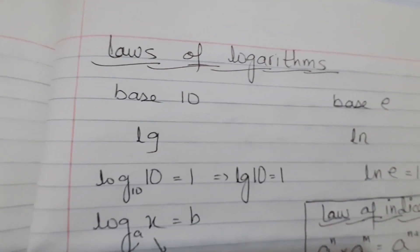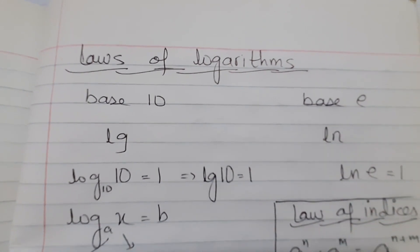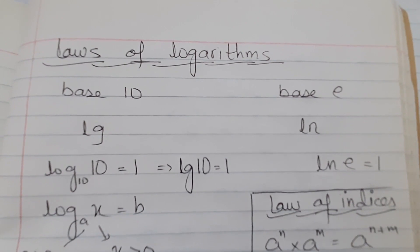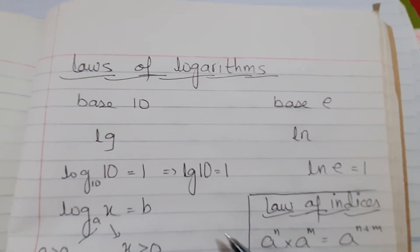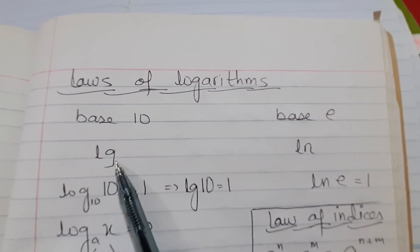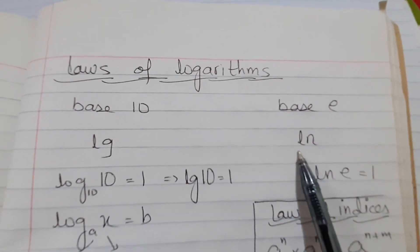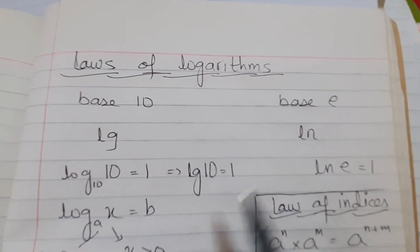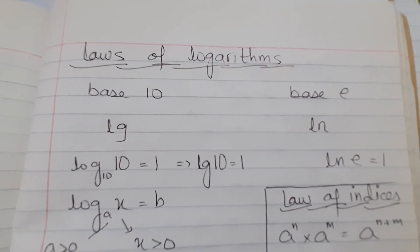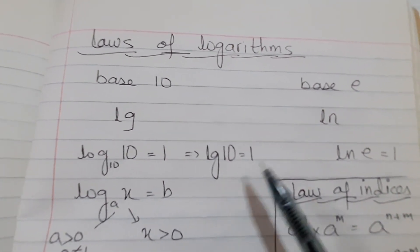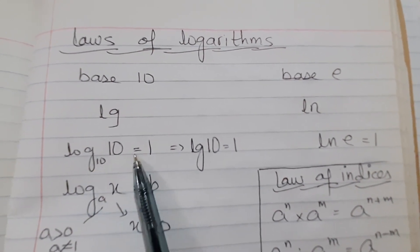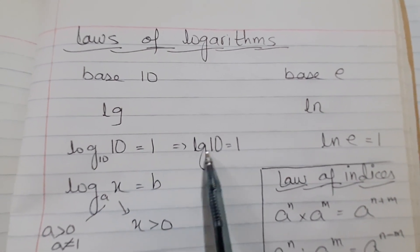First of all we need to revise the laws of logarithm and laws of indices, which we covered in class 8 or 9. What I am revising here is considered prerequisite knowledge, so you should know it. Base 10 log is represented by LG and base E by LN. Log base 10 of 10 equals 1, usually written as LG 10.